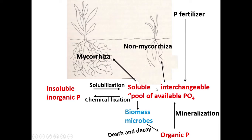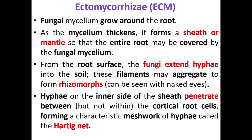During the phenomenon of solubilization, whatever soluble interchangeable pool of phosphorus is available, it is the role of fungi in this association to provide that soluble phosphorus to the plant. However, the other plant in a non-mycorrhizal association is not benefited as much because phosphorus is not being made available to it.